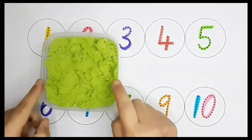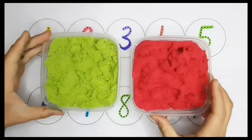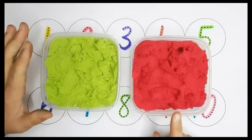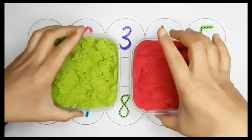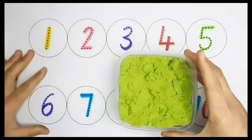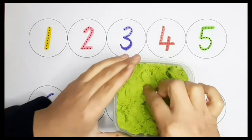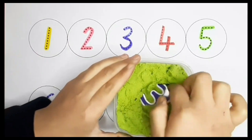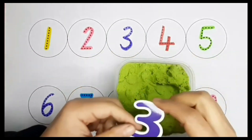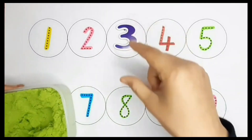We have green scents with 5 numbers in them and red scents with 5 numbers in them. Let's begin. Which number do you think is hidden in scents? It's number 3. Can you help me to find number 3 in the port? Yes, here it is.